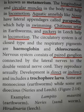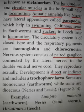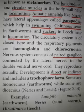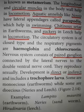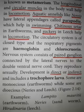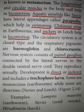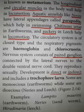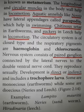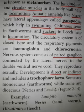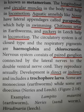They reproduce sexually, having male and female forms. Earthworms are monoecious, meaning both male and female reproductive organs are present in the same organism. Some are dioecious — the dioecious organisms in this phylum include Nereis and leech.